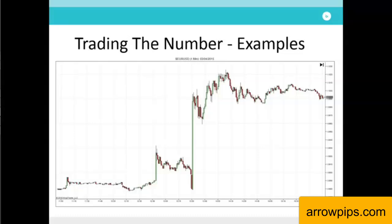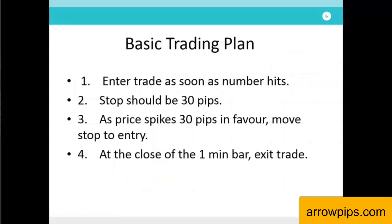Now that you can see the potential for trading the number release, you need to establish some clear rules for consistent application on the day of the release. A solid strategy is as follows: one, enter trade as soon as the number is released; two, stop should be 30 pips; three, as price spikes 30 pips in favor move stop to entry; four, at the close of the one-minute bar, exit the trade. You need to be extremely swift in your application. The objective is to aim for a minimum of one times risk and generally look to achieve around two to three times risk. The first minute following the release generally sees the strongest reaction and so this is the time horizon you should aim to target.